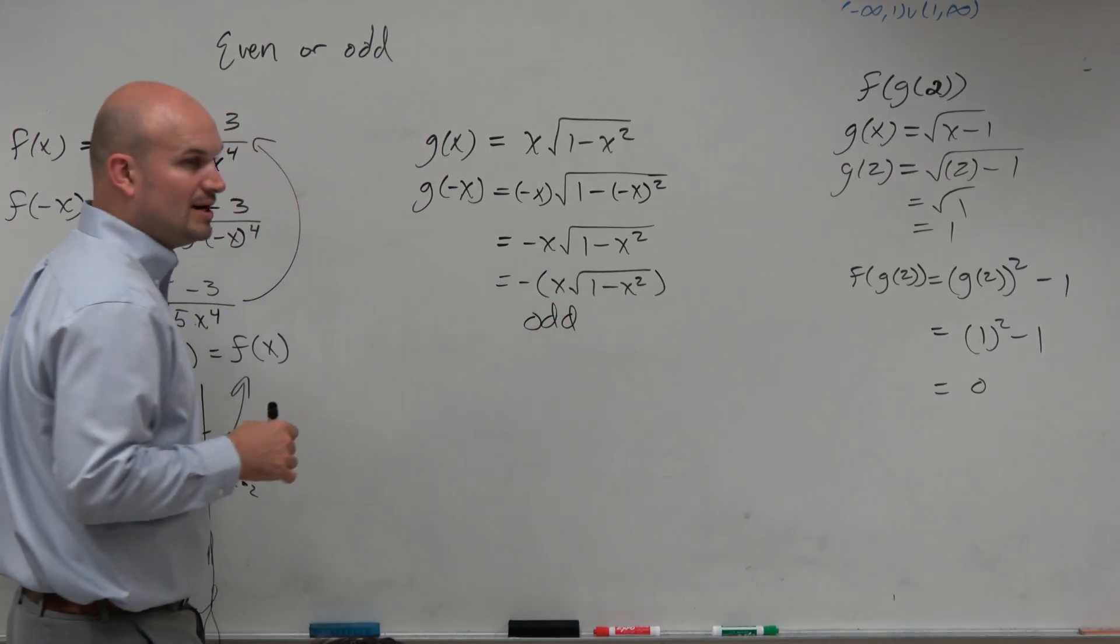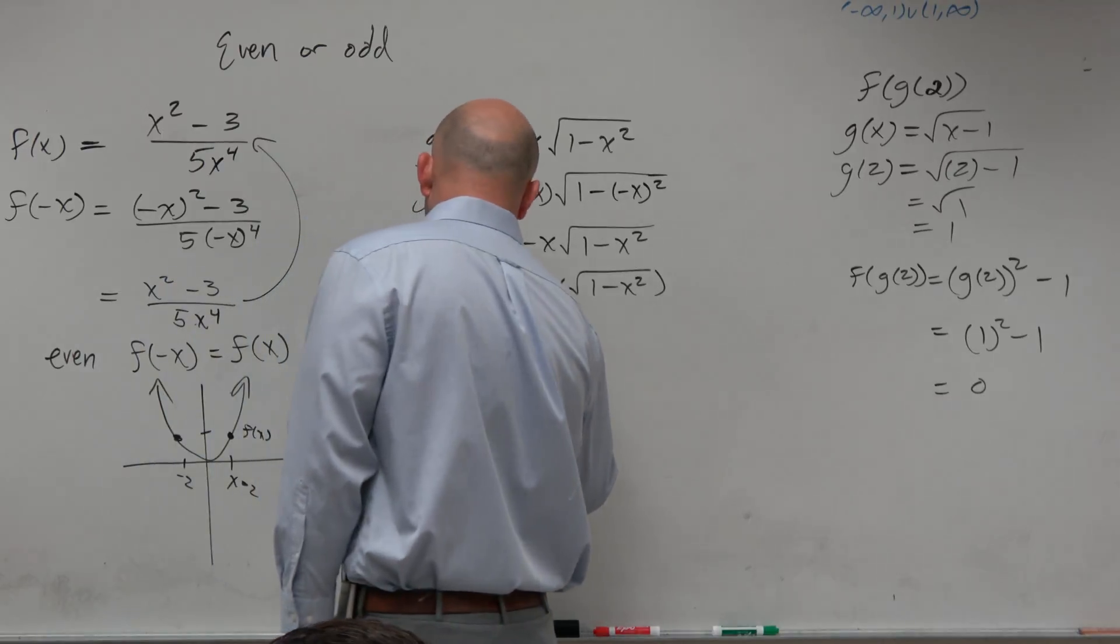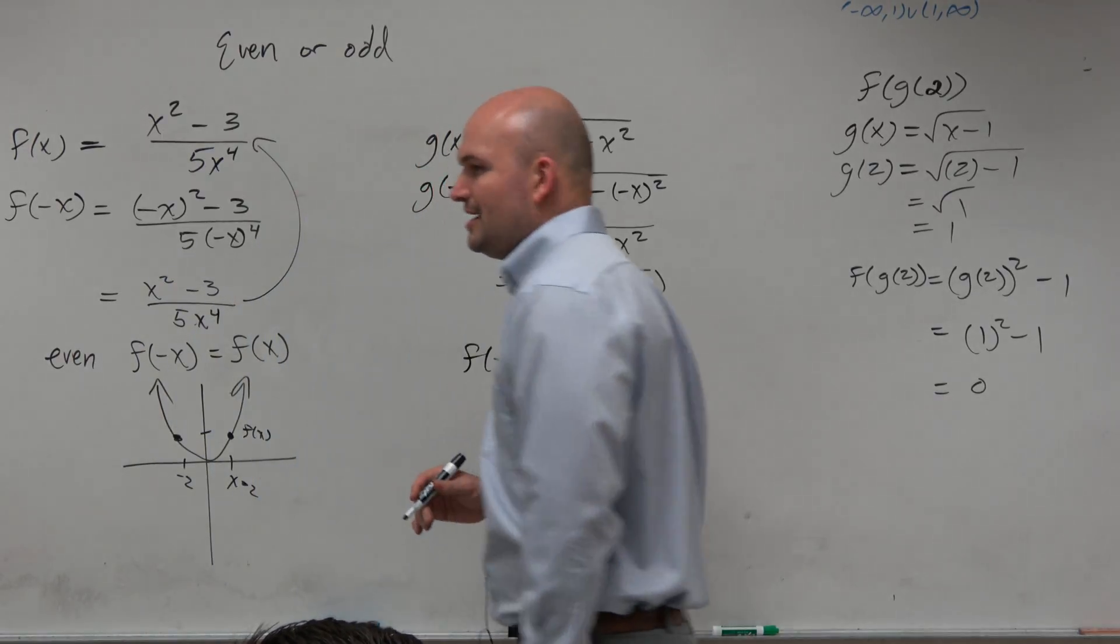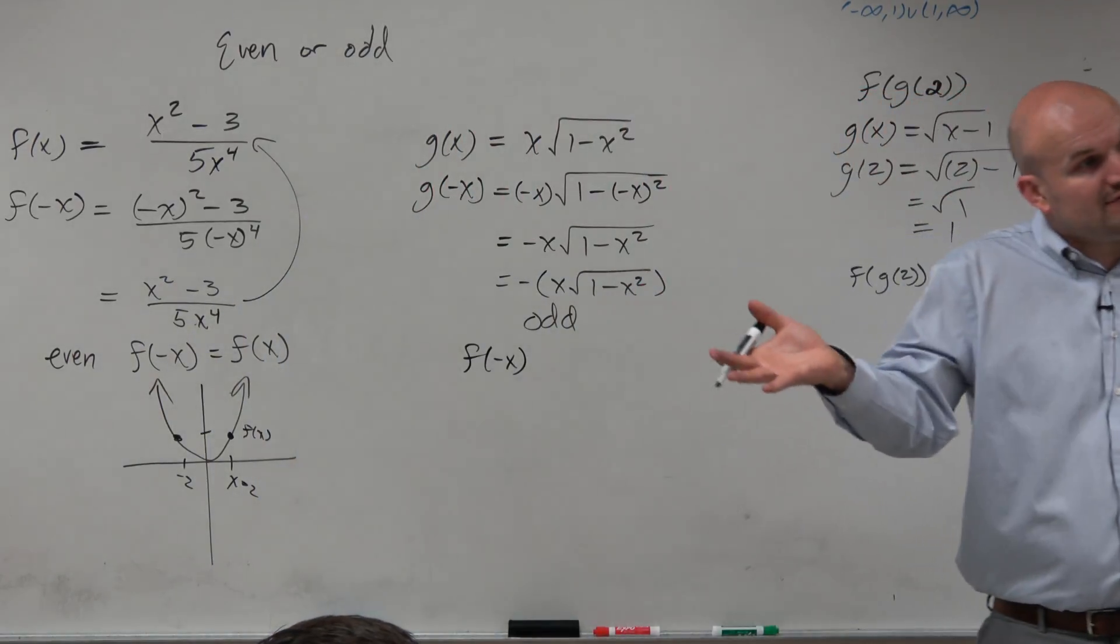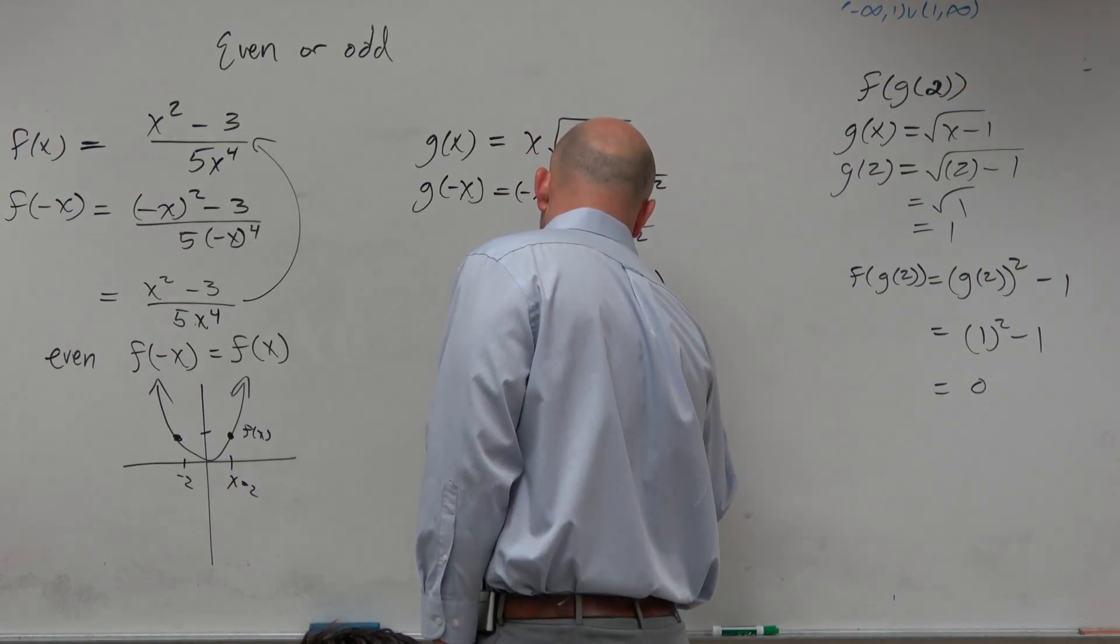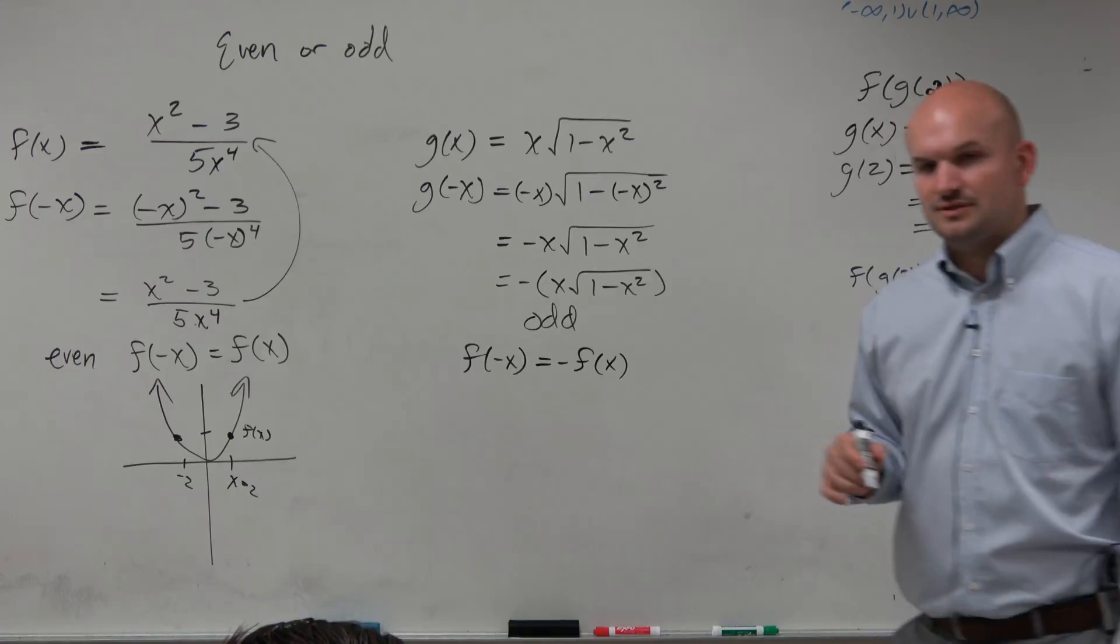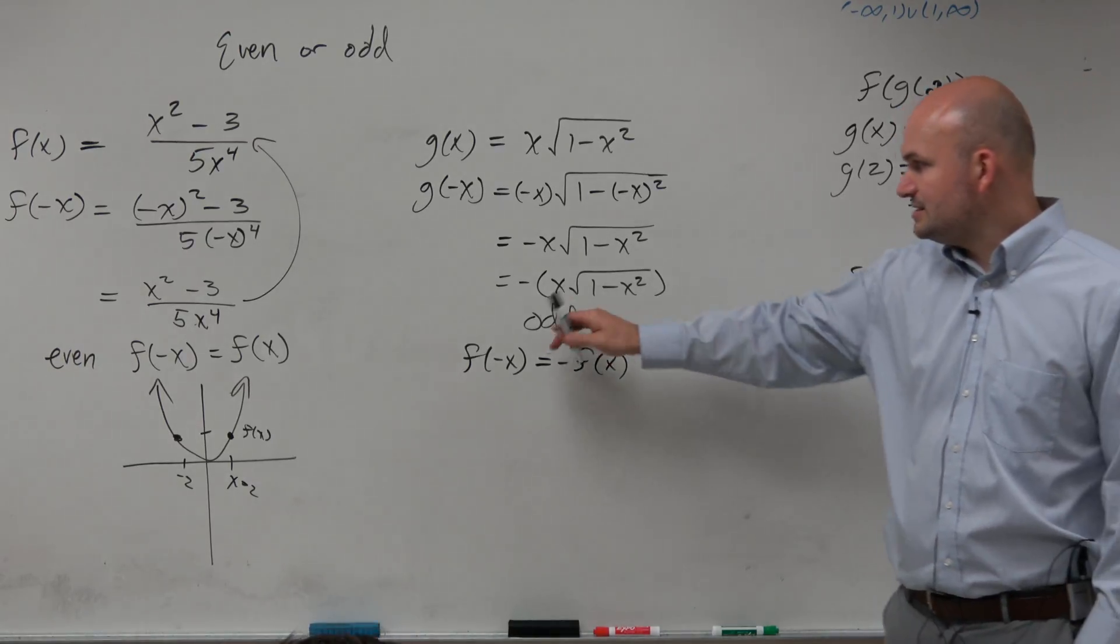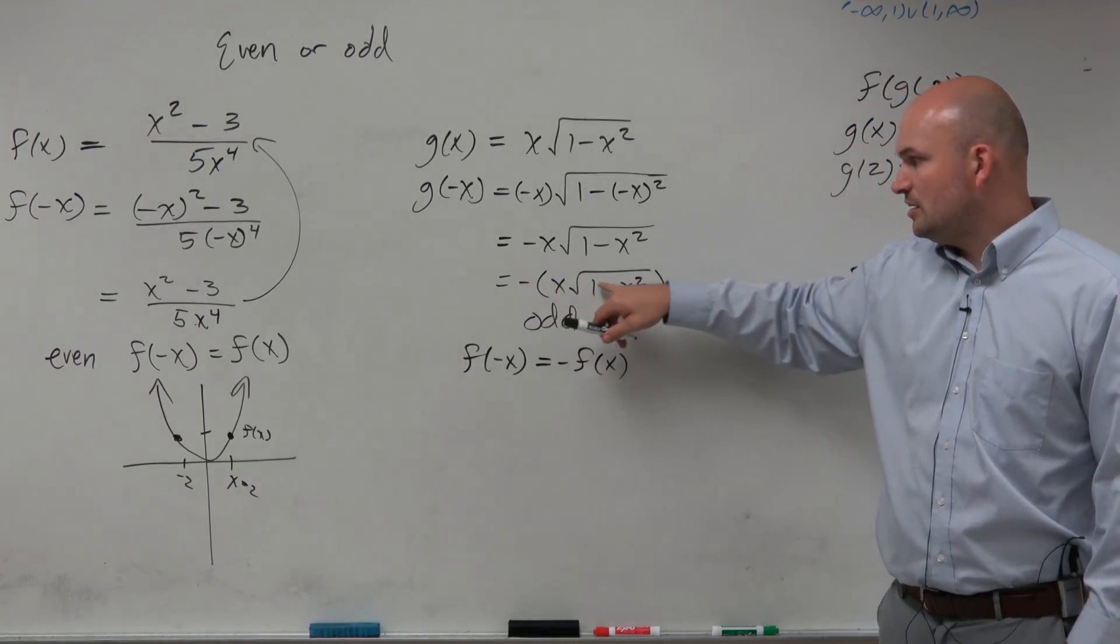The reason being why this is odd is because when you plug in f of negative x, you're not going to get back the original equation. That's even functions. But if you get back the opposite of the function, it's an odd function. You guys can see this is opposite of the original function.